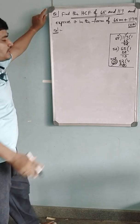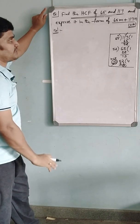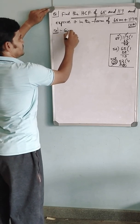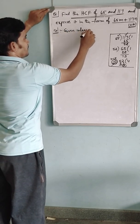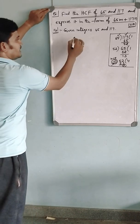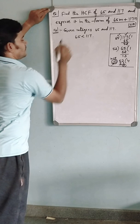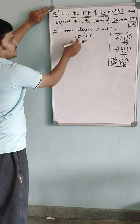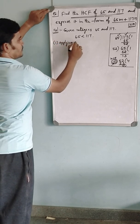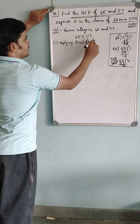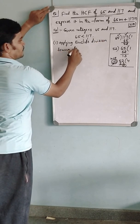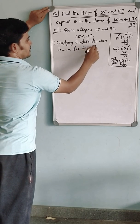In the 10th class, you have to write this using Euclid's division algorithm. The given integers are 65 and 117. Clearly 65 is less than 117. We have to apply the division algorithm for these two. Step one: applying Euclid's division lemma for 65 and 117.